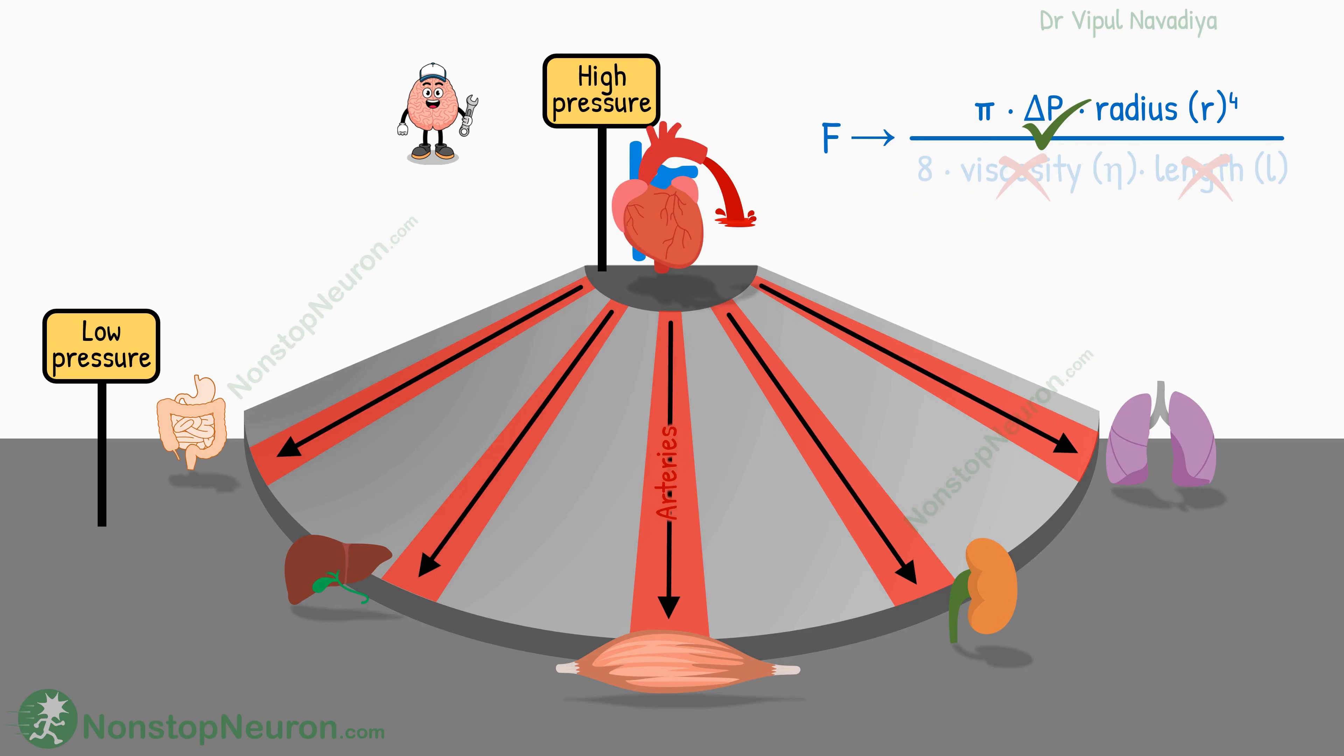So this was about the pressure gradient. Now let's see the role of the radius of the blood vessels. It's a wonderful tool when it comes to the regulation of blood flow. There are two beautiful things about it. One is that it's related to the flow by the fourth power. And second, it allows the regulation of flow at the individual organ level.